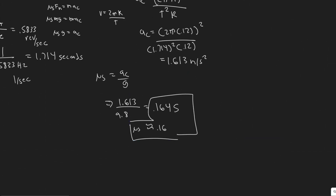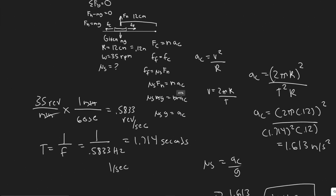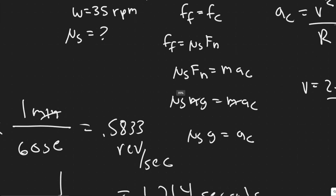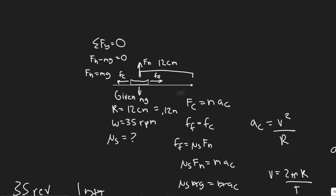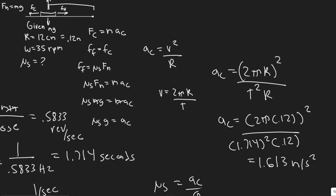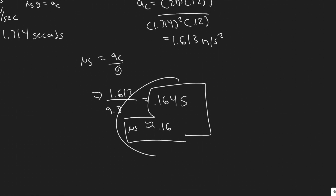So about 0.16 is the coefficient of static friction between the coin and the table at the point right before the coin slides off. Quick overview: we drew the free body diagram, set the force of friction equal to the centrifugal force, simplified to μs·g = A_c, found A_c, and solved. Note there are no units for the coefficient of friction.